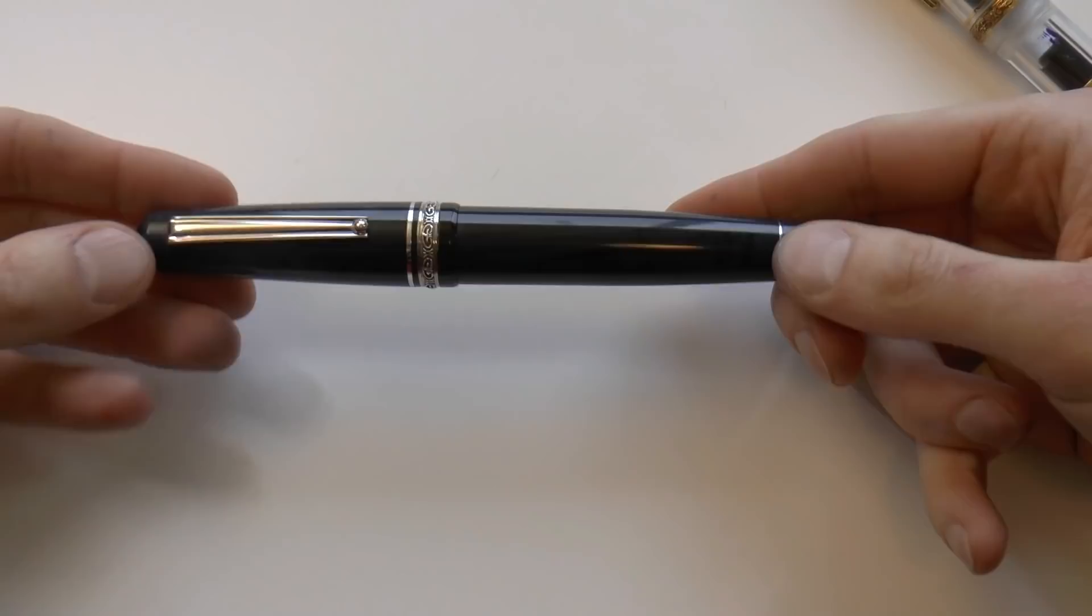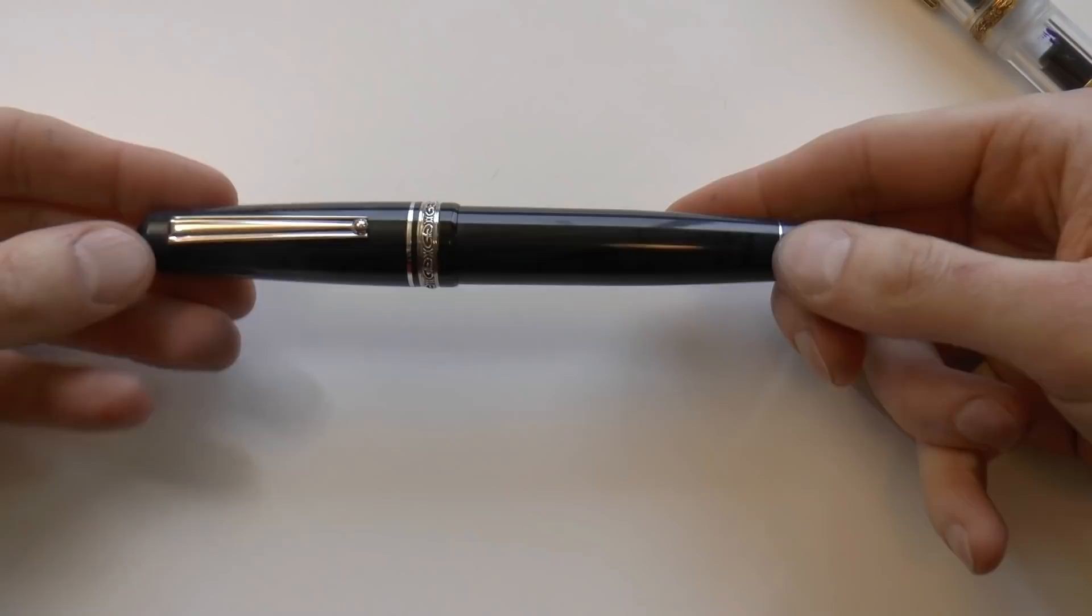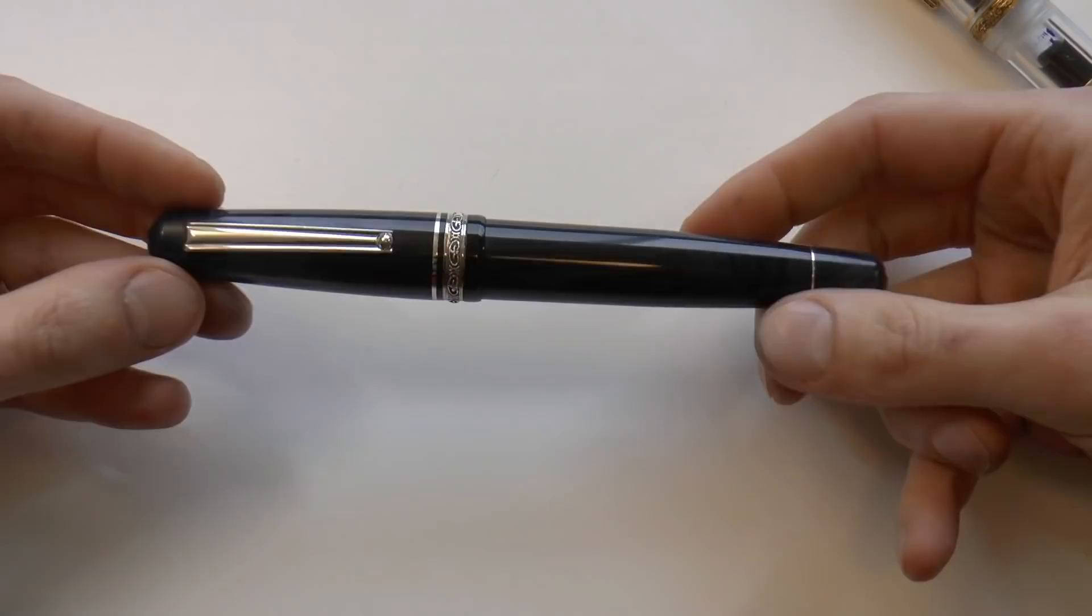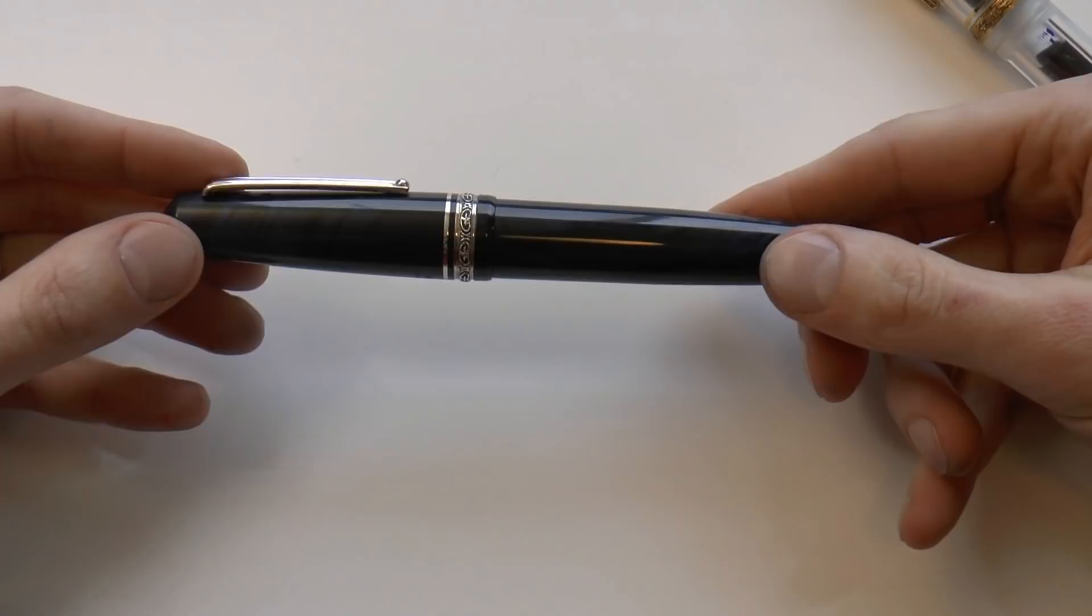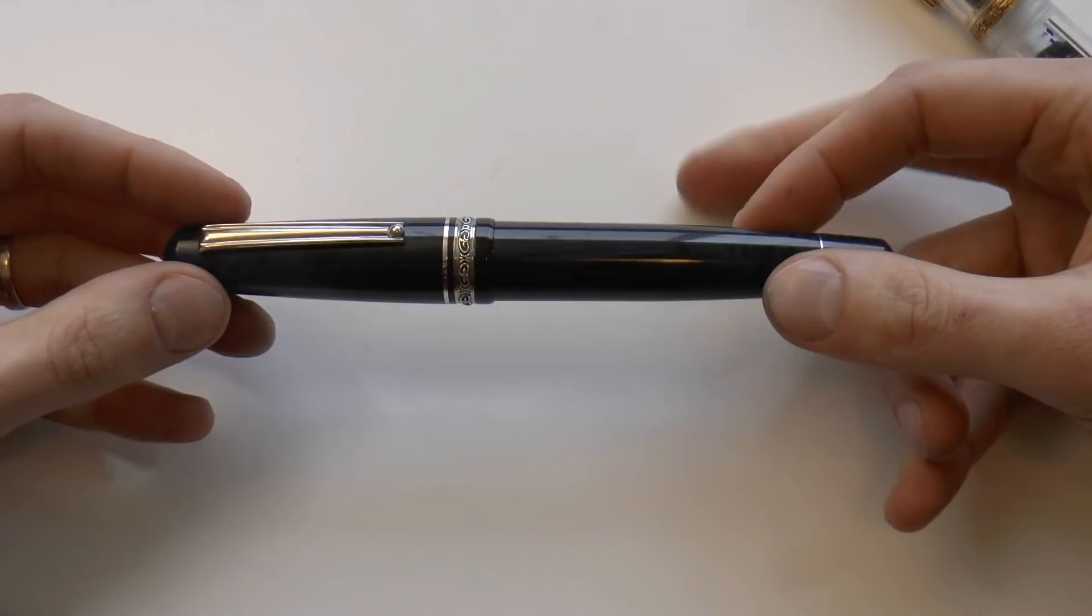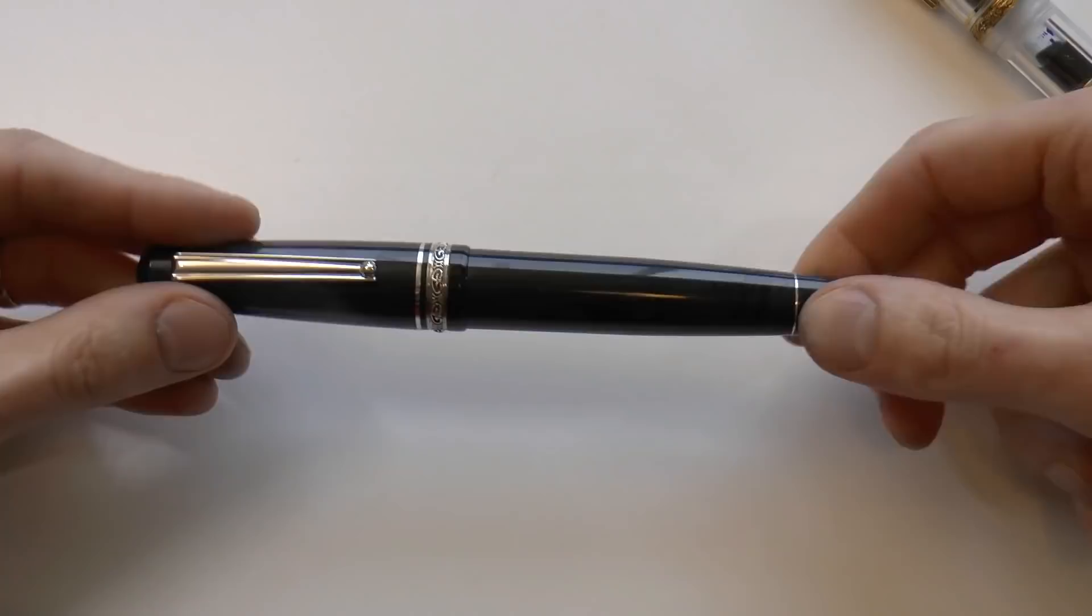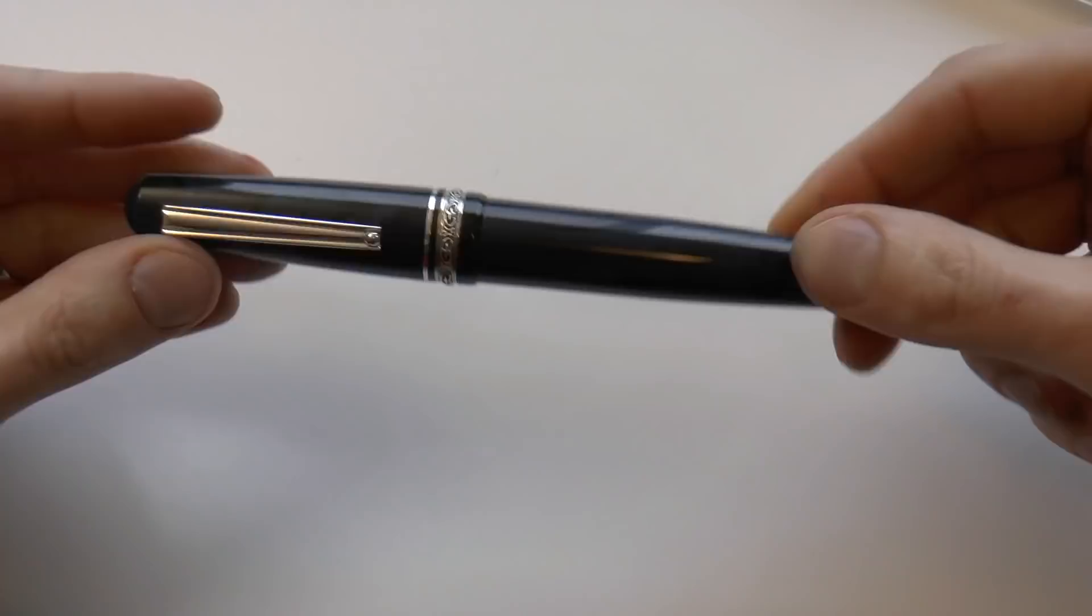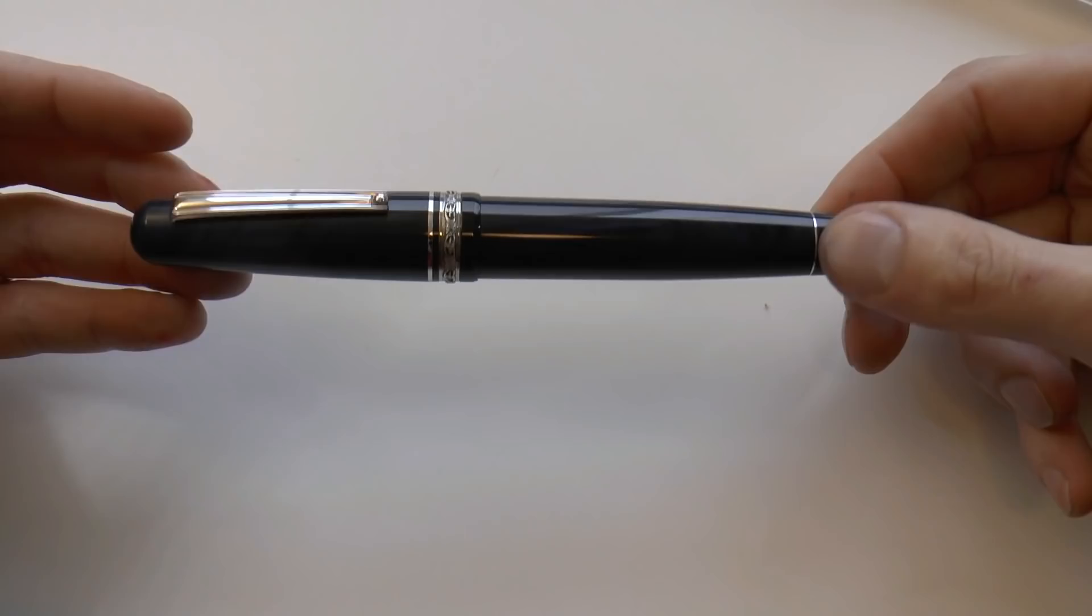But then we have this. Now there are a bunch of Roma Imperiales out there. This, as I understand it, was part of the original lineup. Now it's a little hard to show you this color well. It is a very dark blue. There was also a green and there was a very attractive brown mottled ebonite finish. So this is resin, my clear version. But this actually is ebonite, so hard rubber. And I think this is also a very attractive finish.